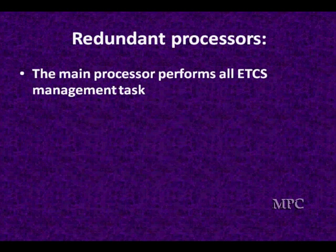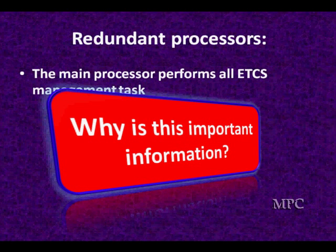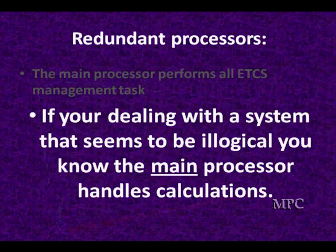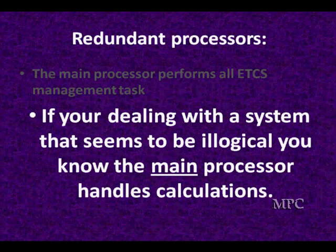The main processor performs all the management tasks — it's doing all the management back and forth, whichever system you have. Why is this important? We've got to talk about it because there are two processors in here and different things show up differently. If you're dealing with a system that seems to be illogical, you know the main processor handles the calculations. If it doesn't seem to be doing the right thing with the throttle and all the inputs are right and all the outputs are right but this thing doesn't work right, it's the main processor.